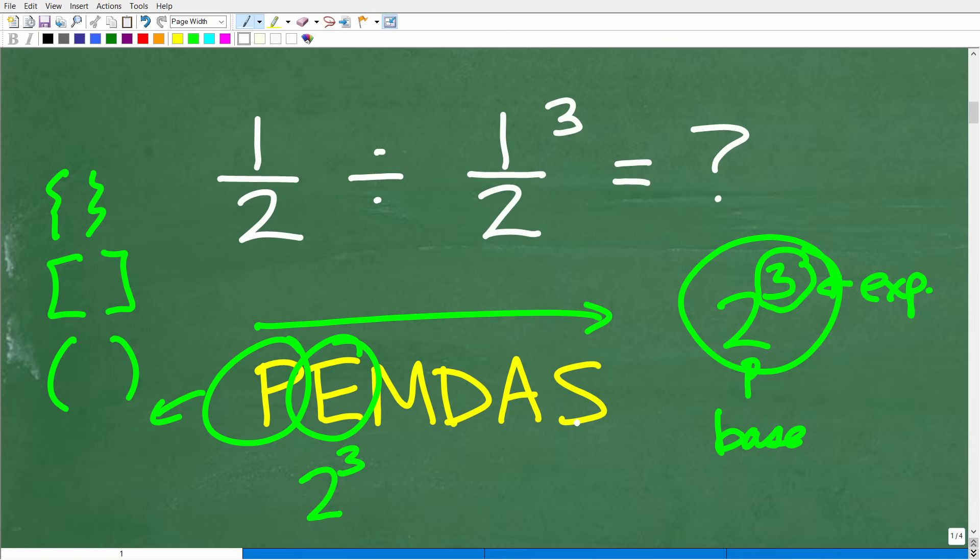M, D, A, and S. M stands for multiplication. D stands for division. A is addition, and S stands for subtraction. Now, it makes sense if I'm saying that this is a checklist from left to right, that we're going to do all multiplication, then division, and addition, and subtraction in this order. But that's not the way it works.